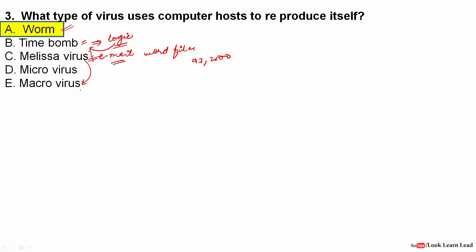A macro virus is a mini program that can infect a particular system. So a macro virus is a program — a macro — that can affect a system. For this question, the answer is worm, as it can reproduce itself in the host computer until the memory is full.